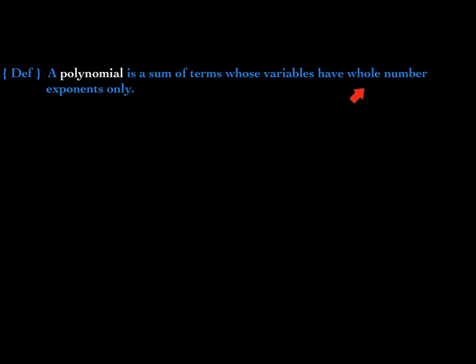A polynomial is a sum of terms whose variables have whole number exponents only. Said another way, a polynomial is a sum of terms where all of the exponents on the variables are only whole numbers. Remember, whole numbers are positive numbers — 0 is a whole number, 1, 2, 3, 4, 5, 6, and so forth. No negatives, no fractions.